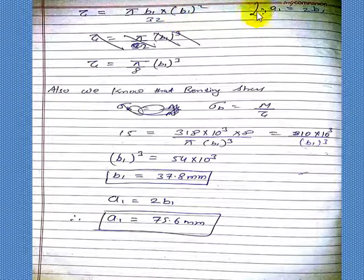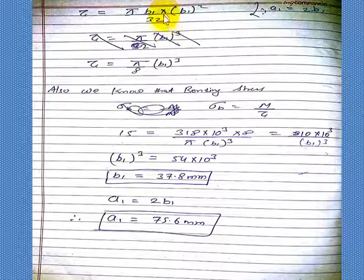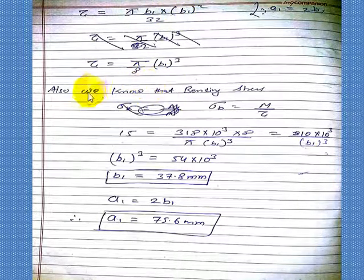So 4 b1 square. 4 from 32, cancel 8. So our section of modulus is pi by 8, b1 cube. This b1 square and this becomes b1 cube.